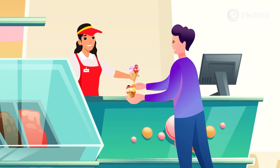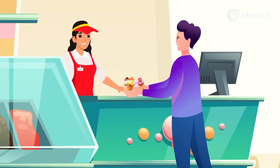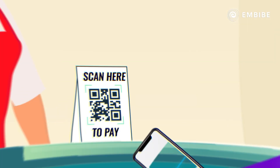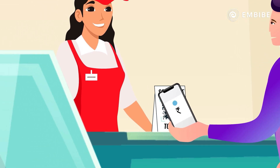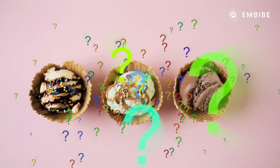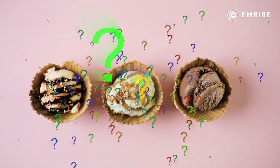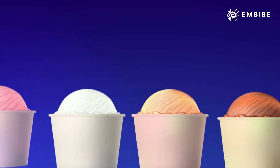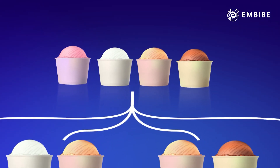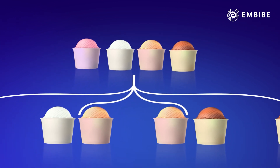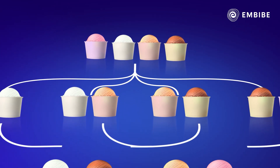You ordered cones for all the combinations possible. So, for how many cones would you pay? How do you think you can find the solution to this problem? If you would know the number of combinations possible, then you would also know the number of cones.